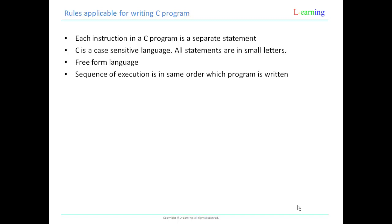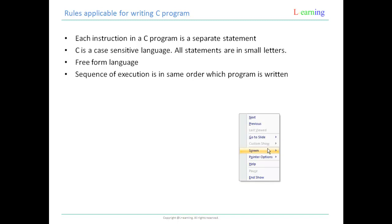The sequence of execution of any C program happens in the same order in which the program is written. So if you have written statement 1, statement 2, statement 3 — first statement 1 will be executed, then statement 2, then statement 3. Typically it goes from top to bottom, left to right.